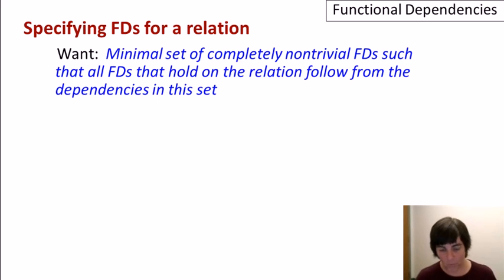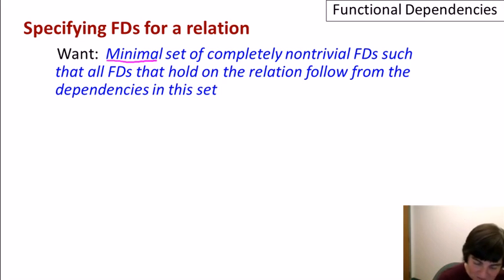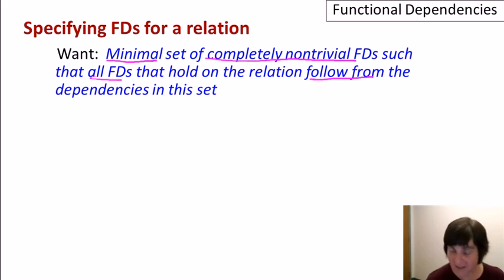Well, I'm going to sum up in one sentence what we're looking for when we specify the set of functional dependencies for a relation. So we have a notion of the real world data. We have our attributes, but we need to specify the functional dependencies in order to get a good design, or for some other reasons I mentioned. What we would like to find is a minimal set of completely non-trivial functional dependencies such that all functional dependencies that hold on the relation follow from, using the technical definition I gave, the dependencies in the set.